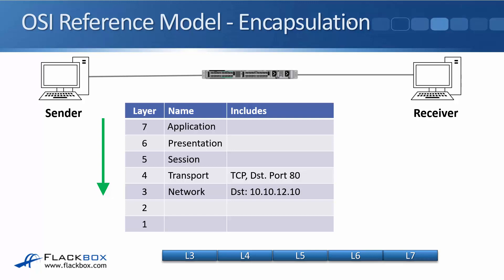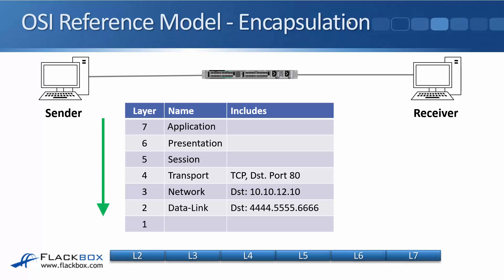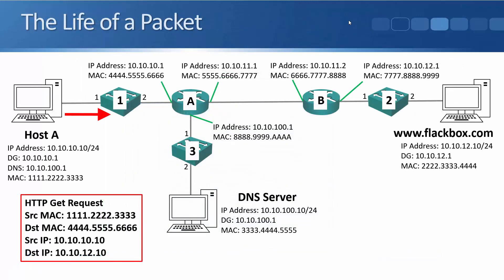It knows that the destination is 10.10.12.10, and it sees that that is on a different IP subnet, so it knows that the destination MAC address is its default gateway, which it already knows is at 4.5.6. It will then put that web traffic onto the physical wire.